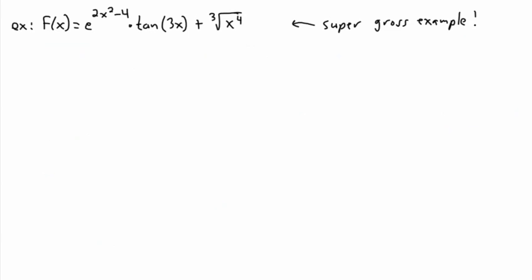Now for the most horrible example I could think of — the 'super gross' example. We have e to the power of 2x squared minus 4, times tangent of 3x, plus the cube root of x to the 4. Let's deal with this simpler last piece first.